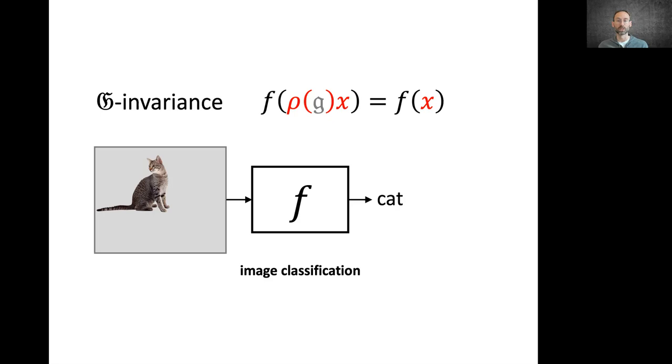where no matter where the object is located in the image, we still want to say that it's, let's say, a cat. So this is an example of shift invariance.